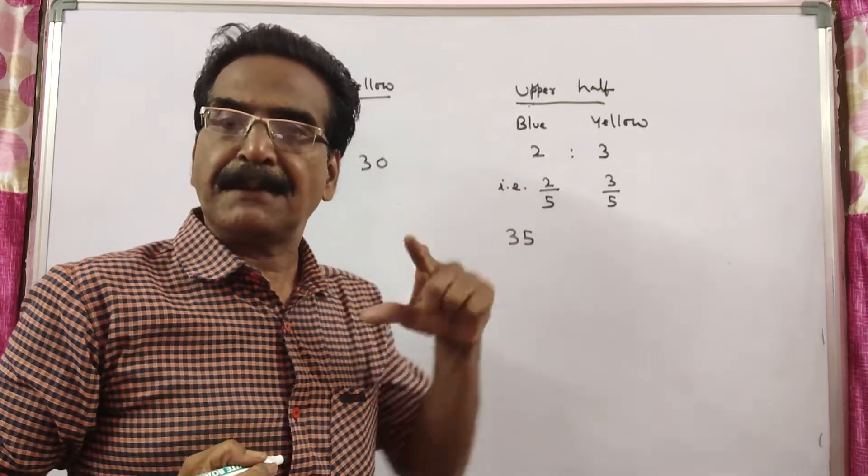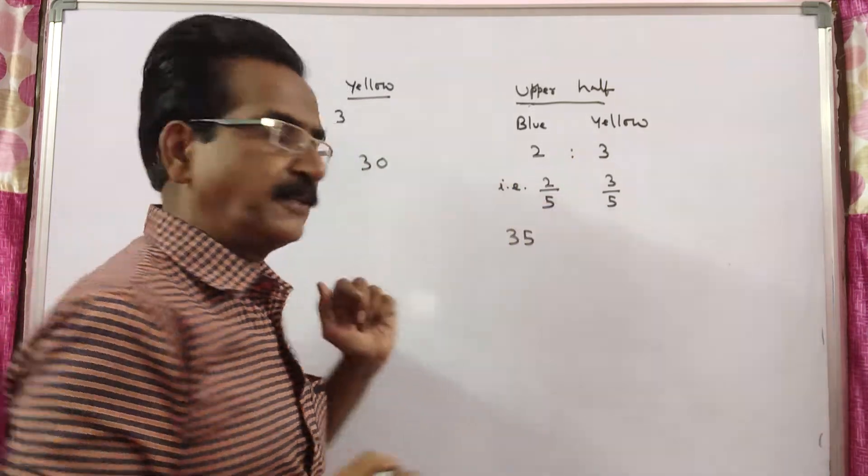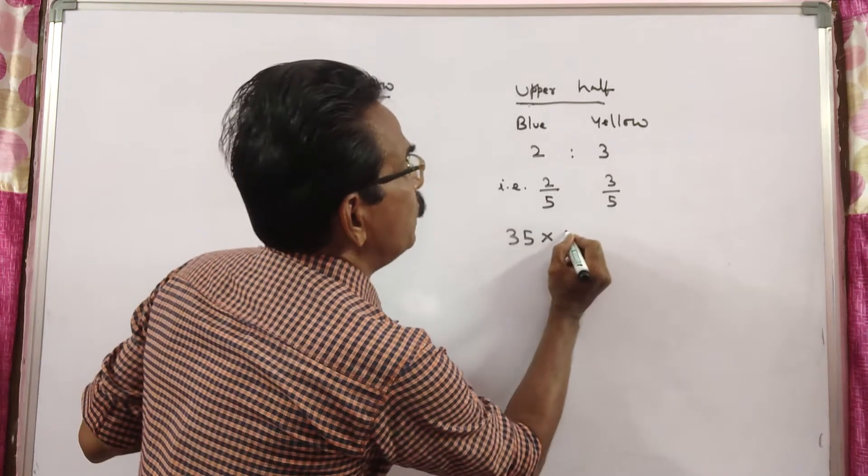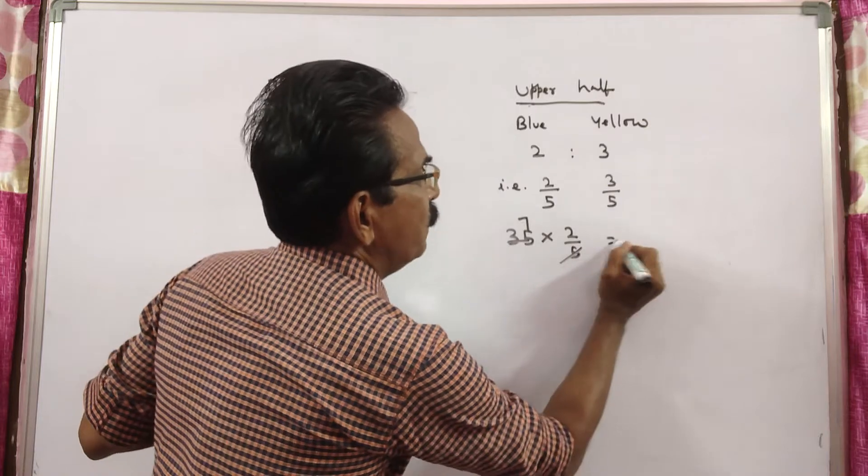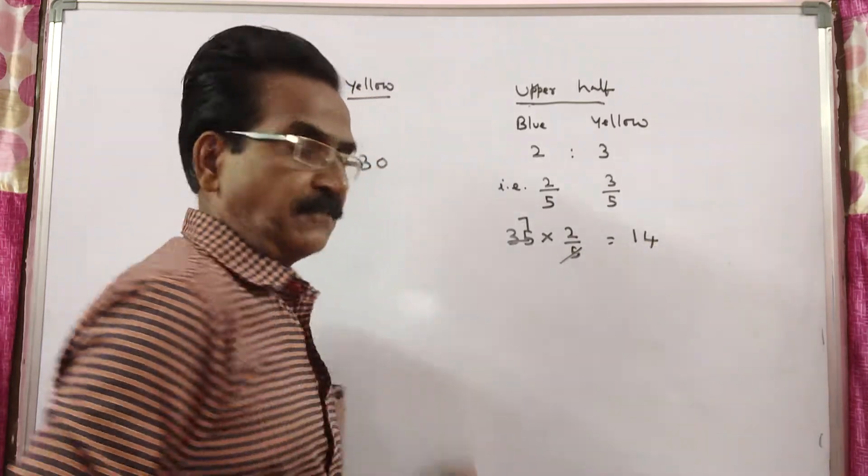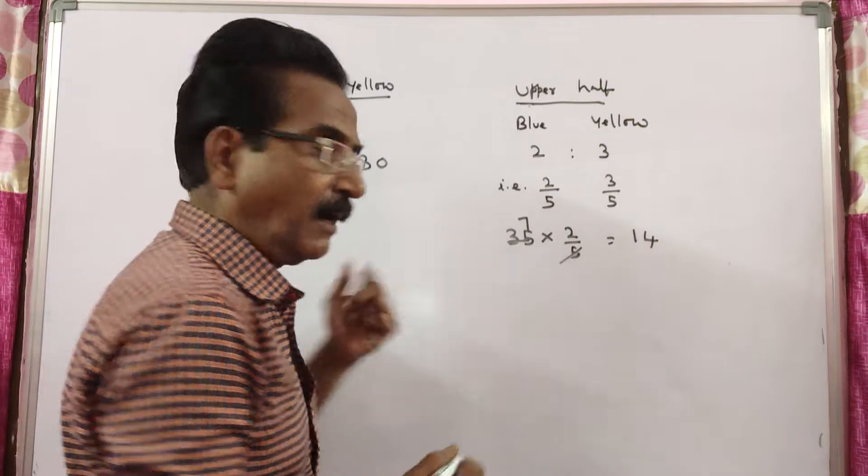Total 70 units. Upper half 35 units, lower half 35 units. So in the upper 35 units, blue is painted 14 units. 14 units is painted blue in the upper half.